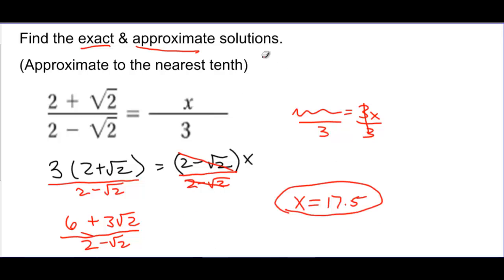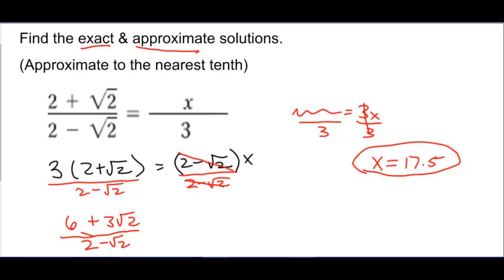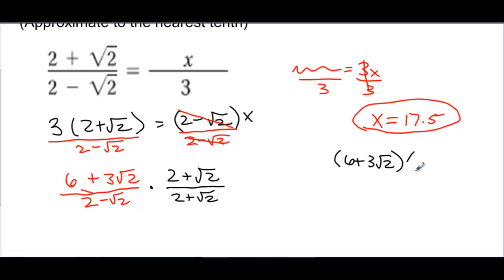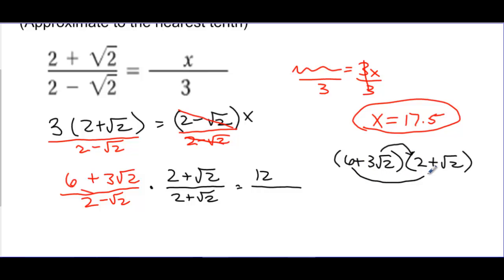So what we're going to do is rationalize the denominator. If you remember back to rationalizing denominators that look like (2 minus the square root of 2), I need to multiply it by its conjugate, which is (2 plus the square root of 2) — on both the top and the bottom. The top becomes (6 plus 3 square root of 2) times (2 plus the square root of 2), so I've got to FOIL all this out. That gives me 12, then 6 square root of 2 plus another 6 square root of 2, so that's 12 square root of 2. And then 3 square root of 2 times square root of 2 is 3 times 2, which is 6. That's all over the bottom, which I also need to multiply out.